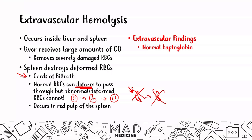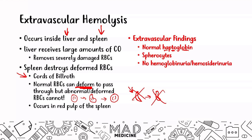With extravascular hemolysis, because everything is happening in the liver and the spleen, you're not going to have an outflow of hemoglobin into the bloodstream, and therefore you won't see haptoglobin levels rising — you'll see normal haptoglobin. You will see spherocytes. You will not see hemoglobinuria or hemosiderinuria, which makes sense because hemoglobin is not flowing freely in the bloodstream. However, this can present with urobilinogen in the urine — that is an important finding common to both intravascular and extravascular hemolysis.